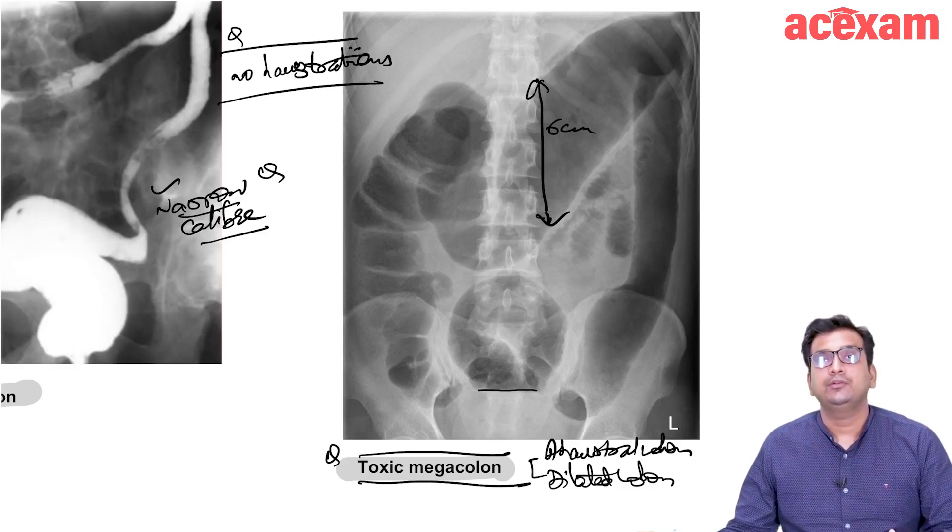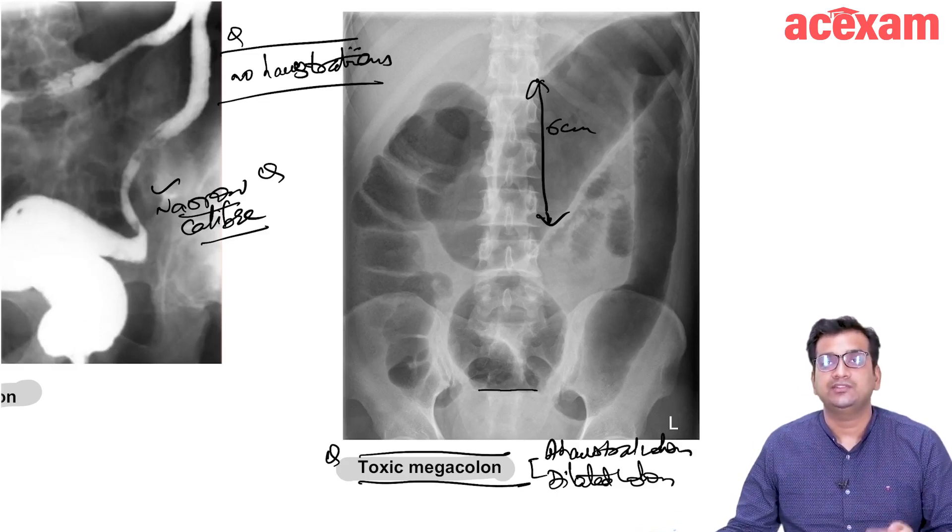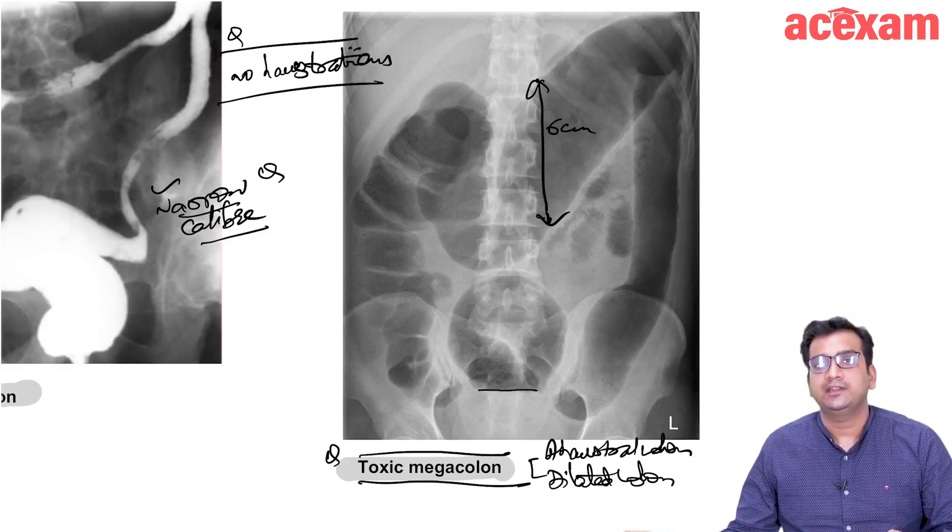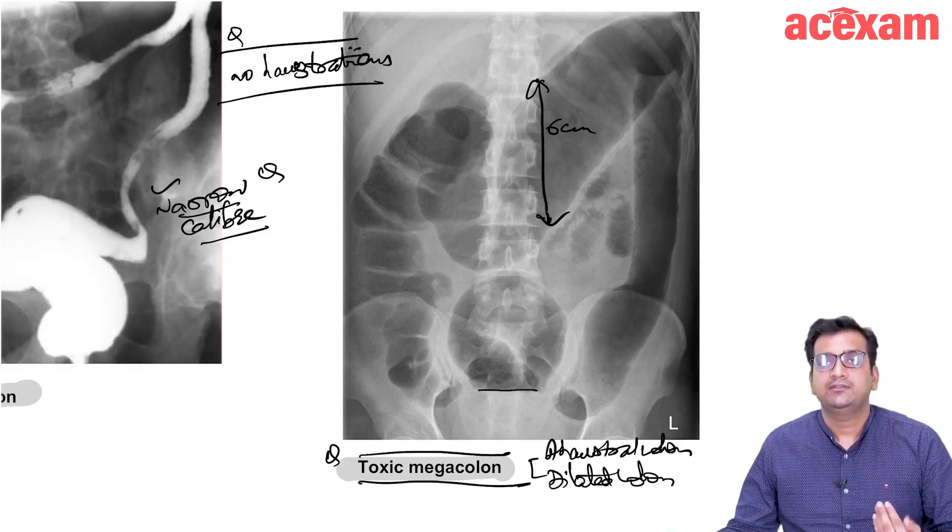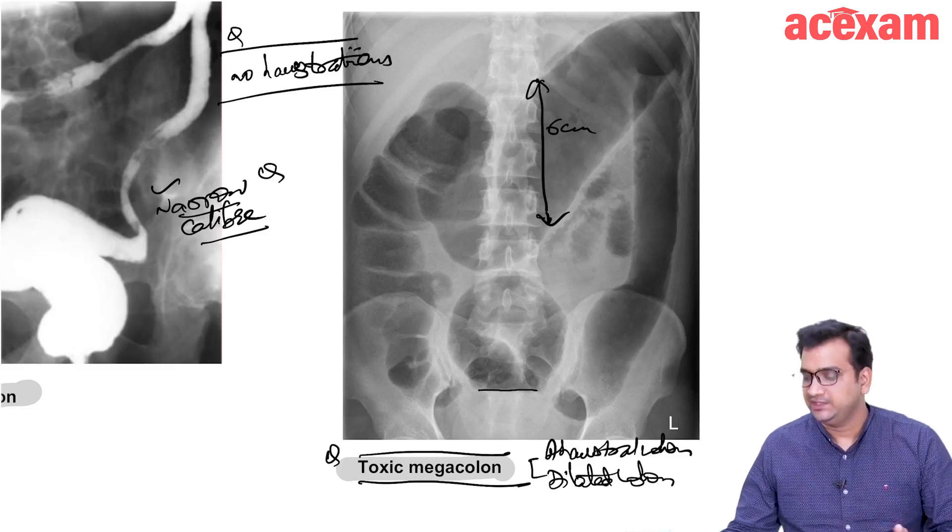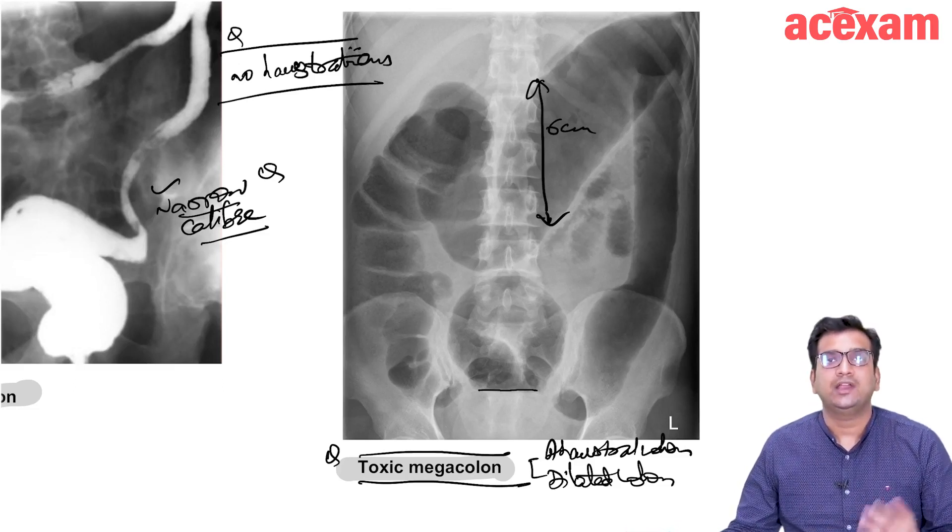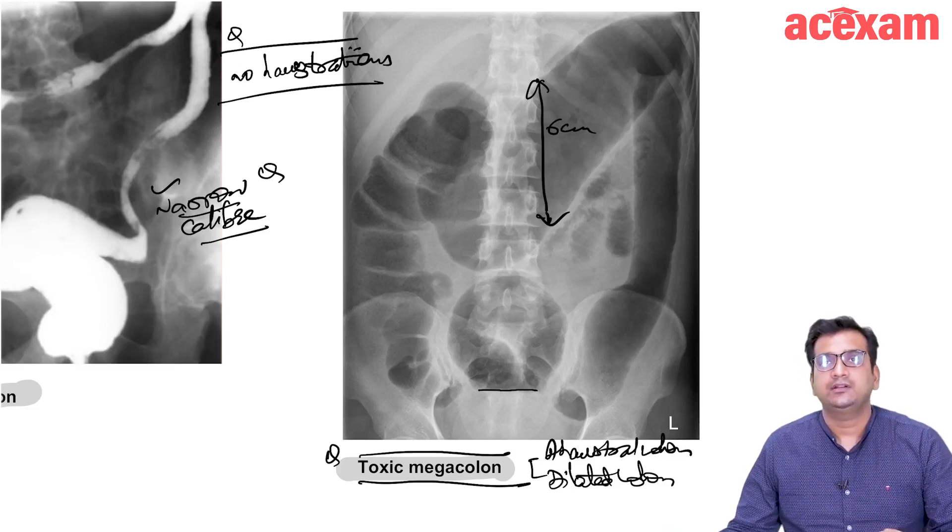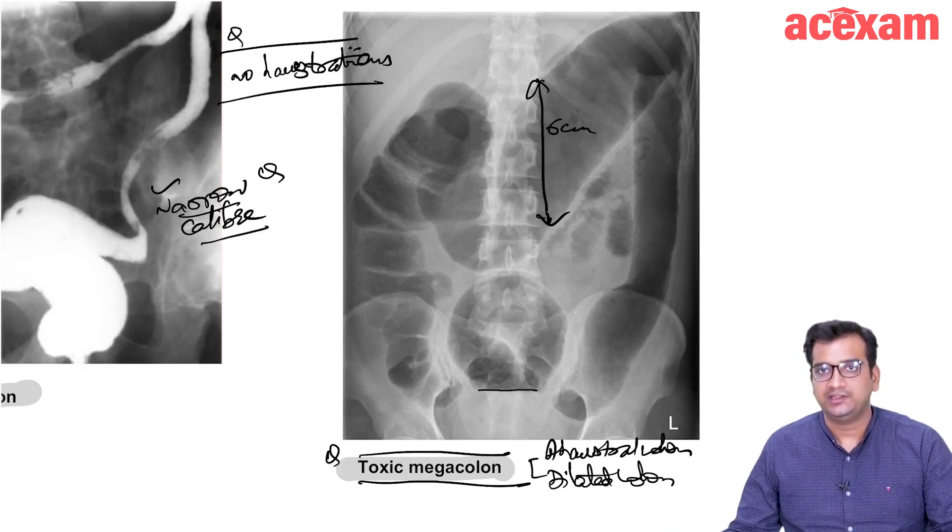So now what we are going to do? We are going to manage this patient initially with IV fluids and along with that we are going to give antibiotics to prevent sepsis and we have to perform surgery. In surgery we will remove this toxic colon as it will become gangrenous later on and can lead to death of a patient and sepsis.